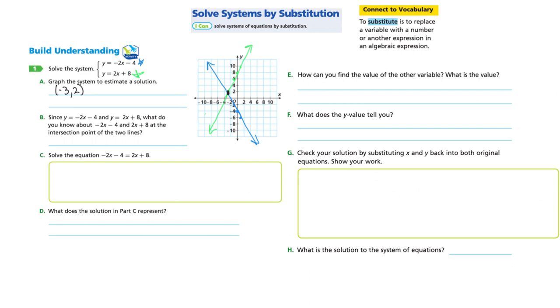So B, since y equals negative 2x minus 4 and y equals 2x plus 8, y equals both of those things. What do you know about negative 2x minus 4 and 2x plus 8 at the intersection point of the two lines? That's where they should be equal to each other. And you can see that from the graph right here. These two lines are the same at the same point right here. Whether that's negative 3, 2 or not, I'm not 100% sure. So let's look at the next section. They're taking you through this step by step which is super great because it will give you a better understanding of what's happening when you're doing the substitution.